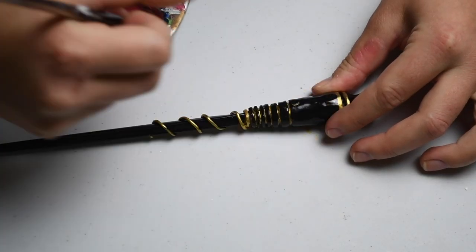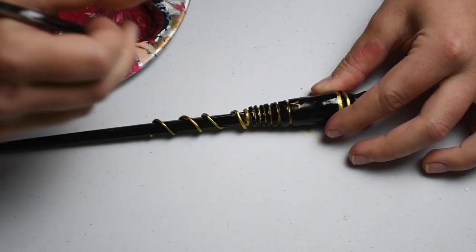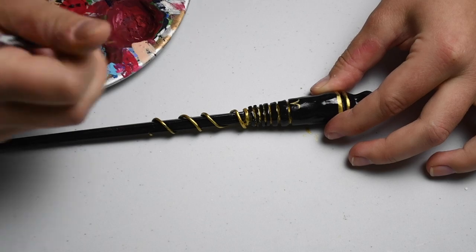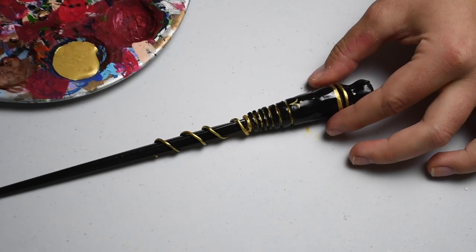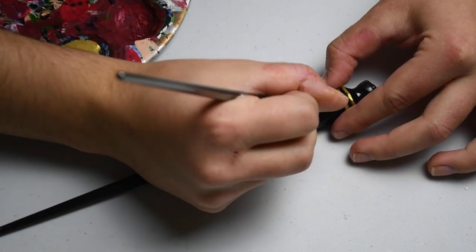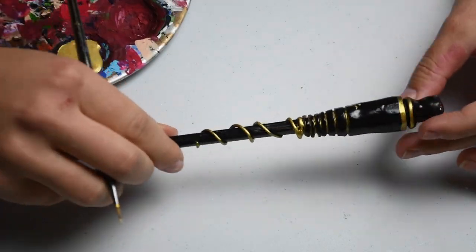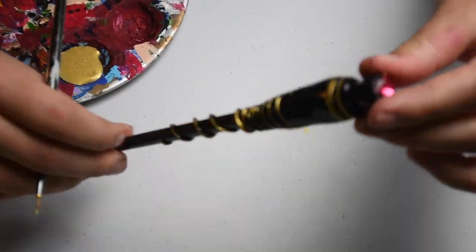So now we're going to add a little bit of gold detailing inside that large black portion. So essentially the design I am doing is two arcing lines. It kind of looks like a Y and it curves at the top with a little dot.